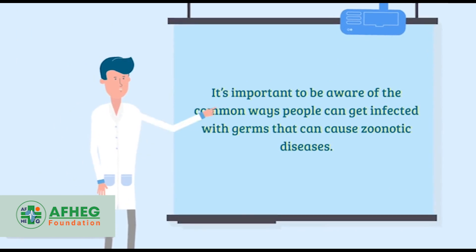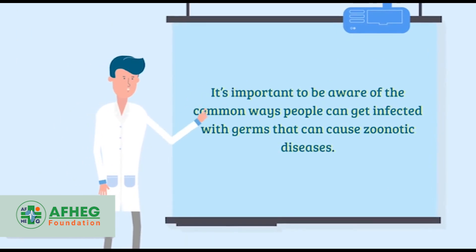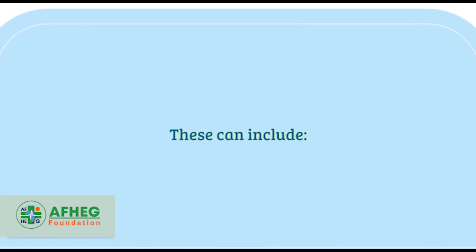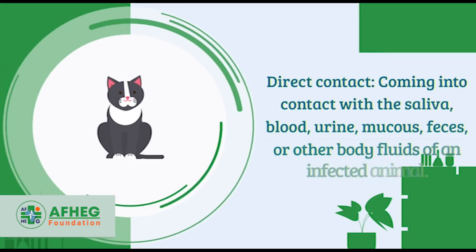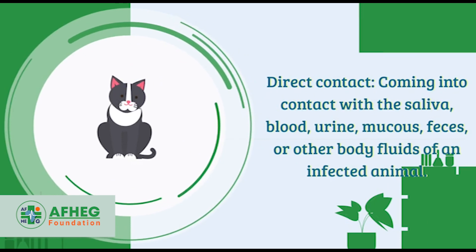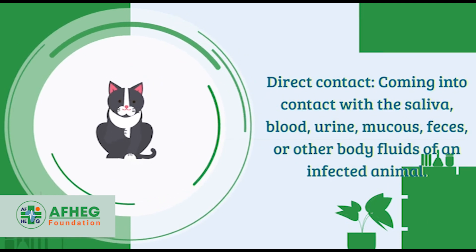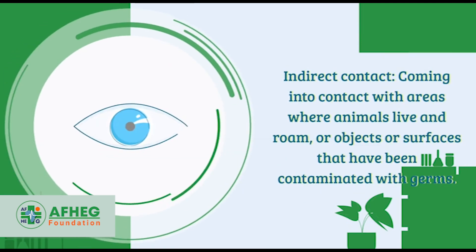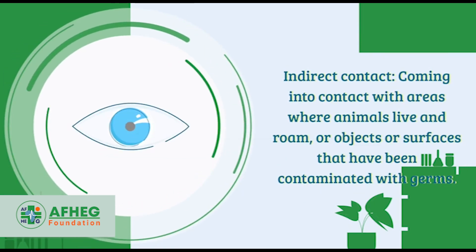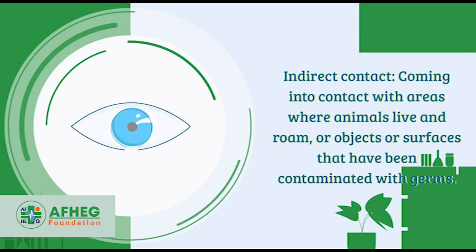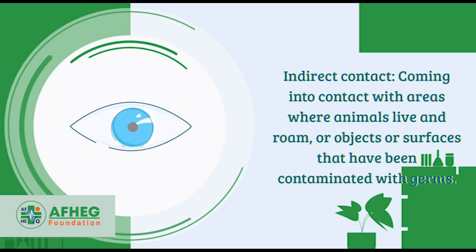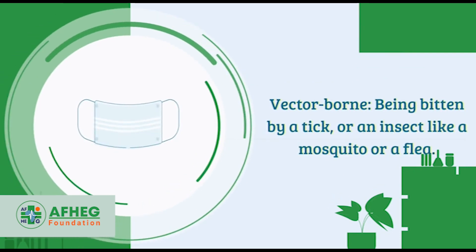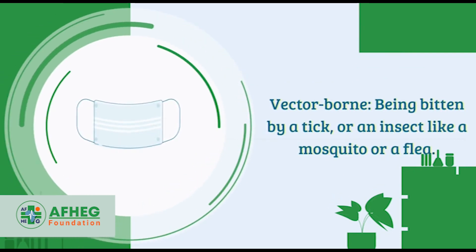It's important to be aware of the common ways people can get infected with germs that cause zoonotic diseases. These include direct contact — coming into contact with the saliva, blood, urine, mucus, feces, or other body fluids of an infected animal — and indirect contact — coming into contact with areas where animals live and roam, or objects and surfaces contaminated with germs.